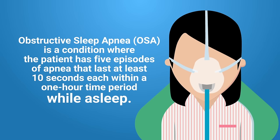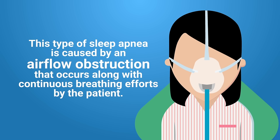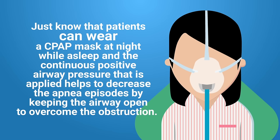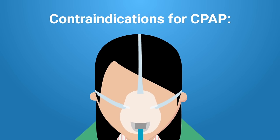Obstructive sleep apnea is caused by an airflow obstruction that occurs along with continuous breathing efforts by the patient. Patients can wear a CPAP mask at night while asleep, and the continuous positive airway pressure applied helps to decrease apnea episodes by keeping the airway open to overcome the obstruction. CPAP isn't always recommended — contraindications include apnea and hypoventilation, because the patient must be breathing spontaneously.